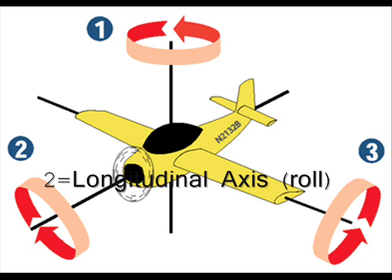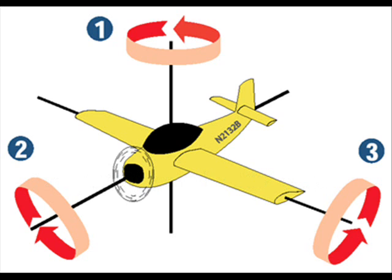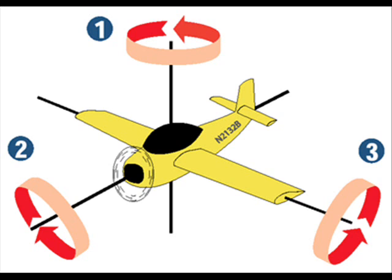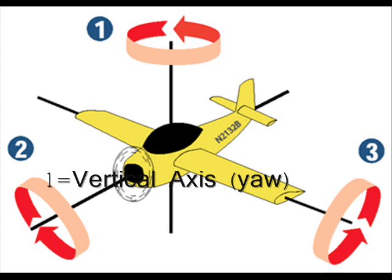The longitudinal, or long, axis runs through the centerline of the airplane from nose to tail. Airplanes roll or bank about their longitudinal axis. A good way to remember: it's a long way from the nose to the tail of an airplane. A sideways pass in football is called a lateral pass — similarly, the lateral axis runs sideways through the airplane from wingtip to wingtip, and airplanes pitch about their lateral axis. The vertical axis of the airplane runs up and down from the cockpit to the belly. Airplanes yaw about their vertical axis.